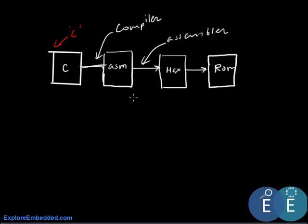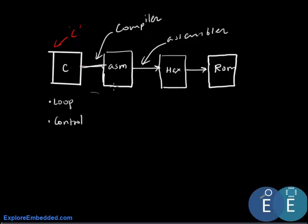Assembly is a group of hex codes, and several assembly instructions are combined to make C constructs. C constructs like loop statements and control statements are all derived from assembly language. Since C instructions are a group of assembly instructions, the C code is always larger than the corresponding assembly code for an application.